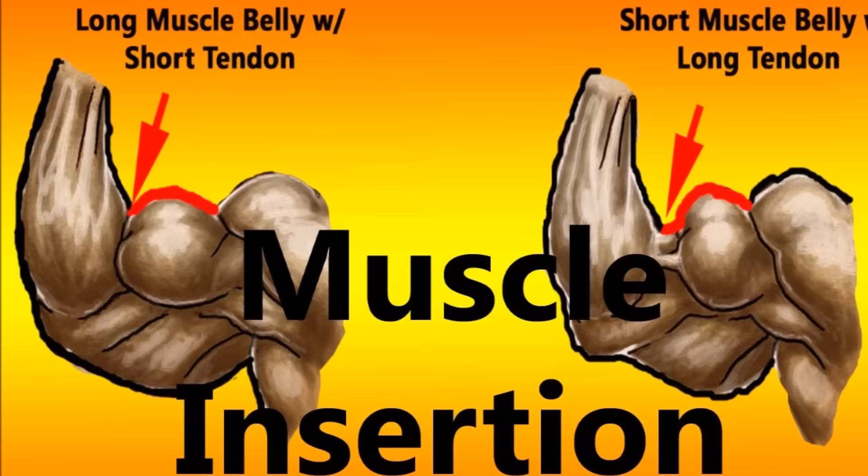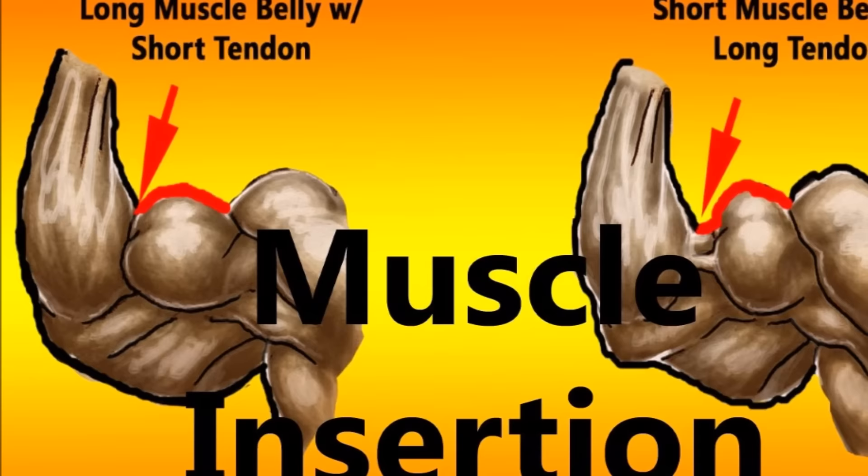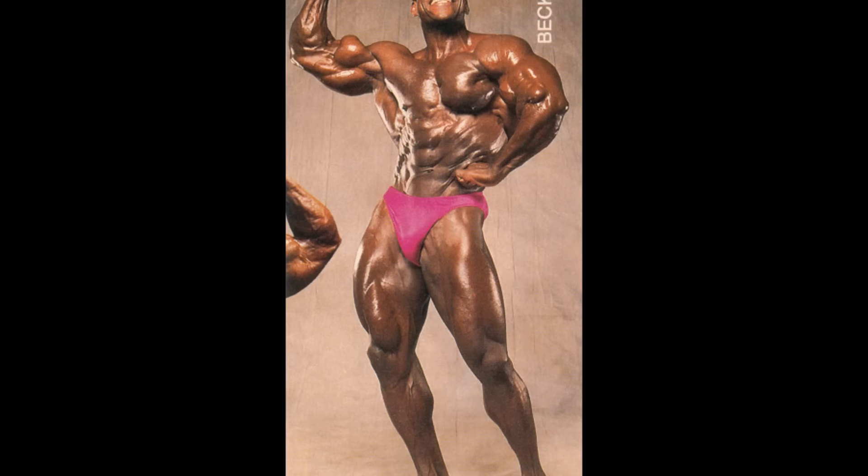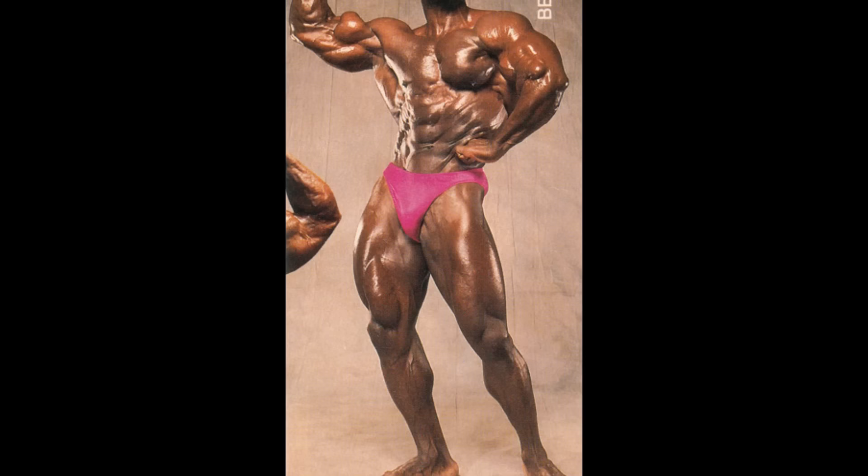When people refer to a short bicep or short bicep head, they're referring to a short muscle belly with a long tendon. When you flex the bicep from the front, it looks kind of similar to a heart and has a much more pronounced peak than a long bicep.